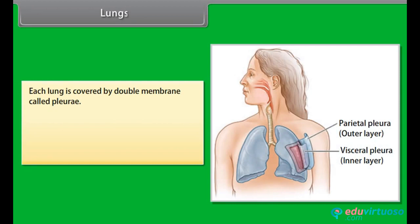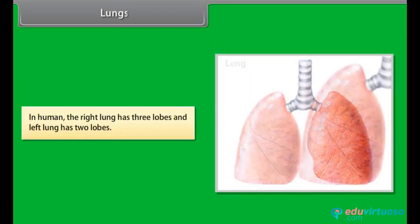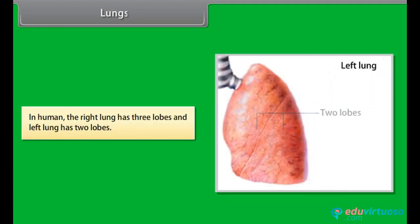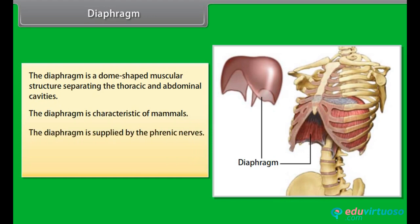Lungs: Each lung is covered by a double membrane called pleura. The outer covering membrane is called the parietal pleura and the inner covering membrane is called the visceral pleura. In humans, the right lung has three lobes and the left lung has two lobes. Diaphragm: The diaphragm is a dome-shaped muscular structure separating the thoracic and abdominal cavities. It is characteristic of mammals, supplied by the phrenic nerves; puncturing of the diaphragm results in stoppage of breathing and is fatal.